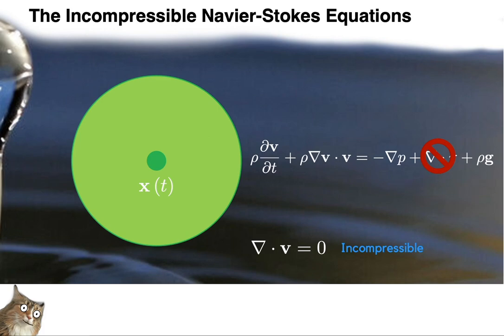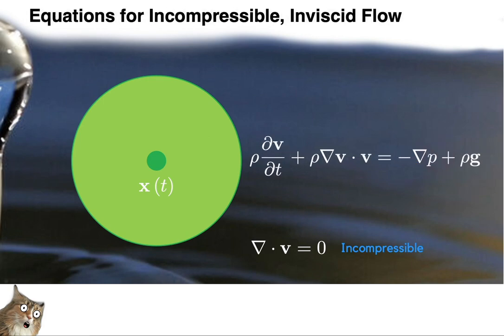Together with the Navier-Stokes equations, this constraint gives us the incompressible Navier-Stokes equations. We will make one more simplification: we assume our fluid blobs only experience pressure forces and gravity. Such fluids are called inviscid. Things like air and water can be modeled as inviscid fluids, which is why so much time and effort has been devoted to solving the equations of motion for inviscid flows. That will be the focus of the remainder of this video.